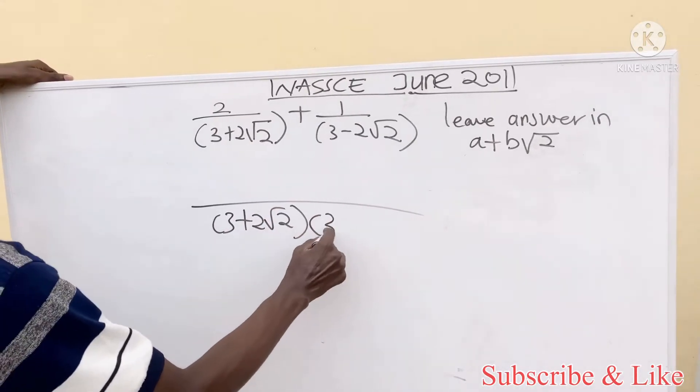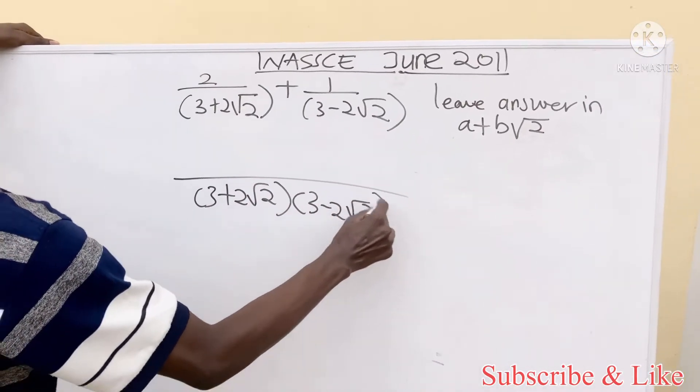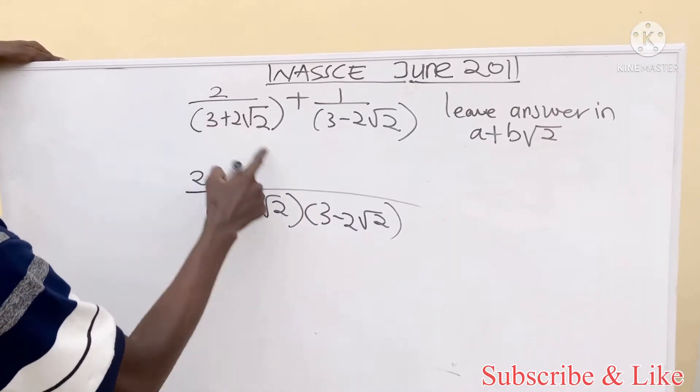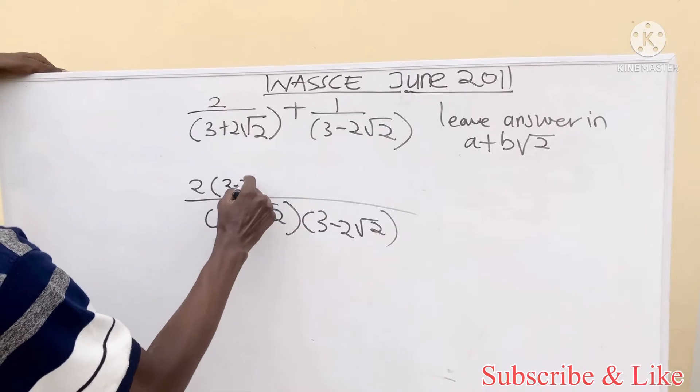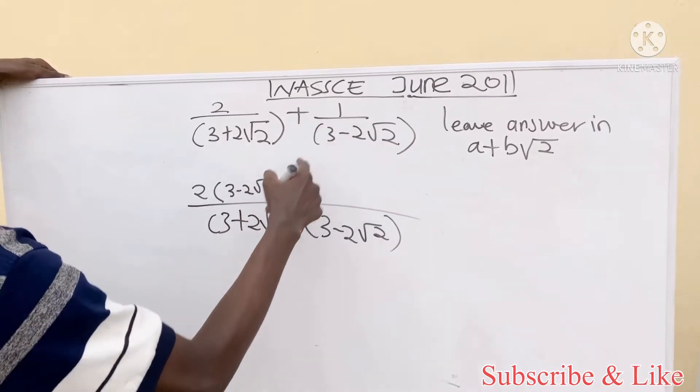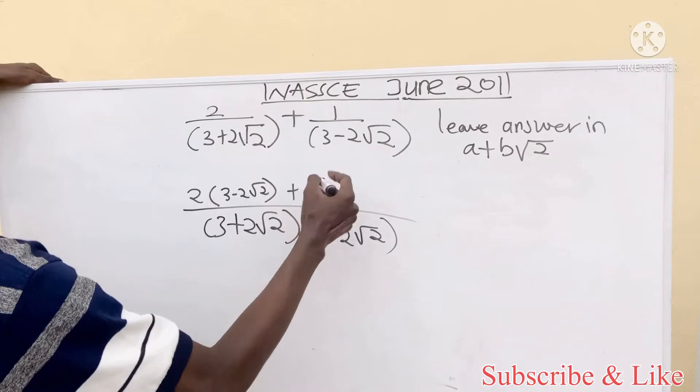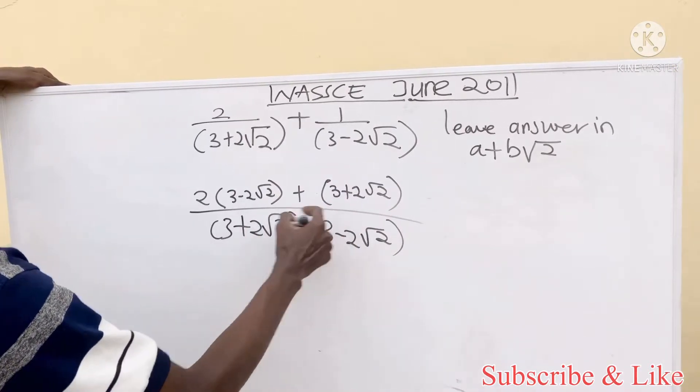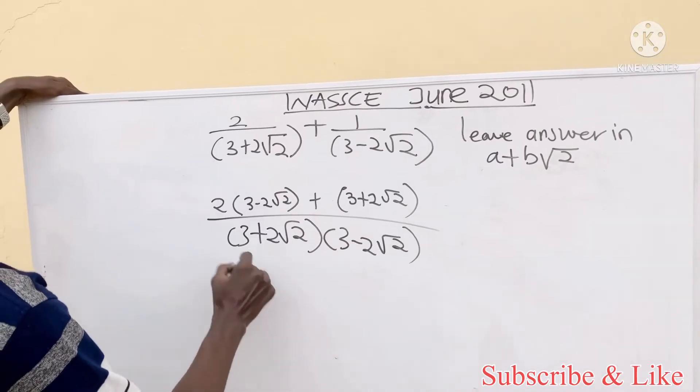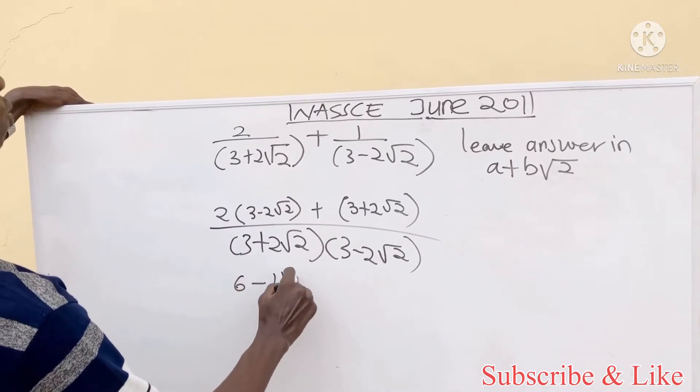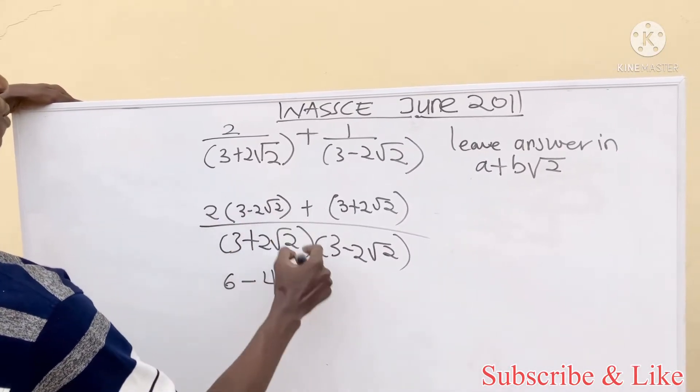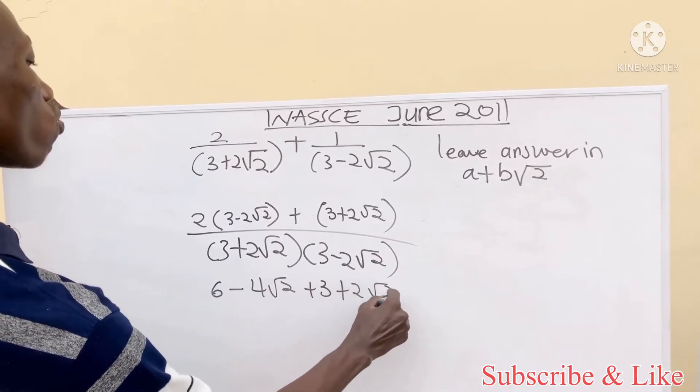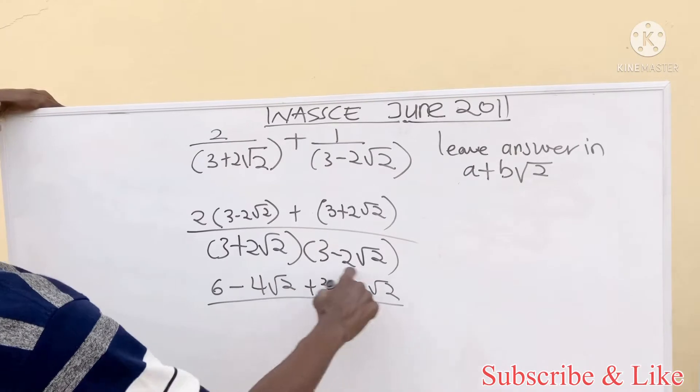This would be two times this part, then one times this part, which we can choose not to write. Now we expand: two times three is six. This will give us four root two. Then at the top, this part you get three plus two.